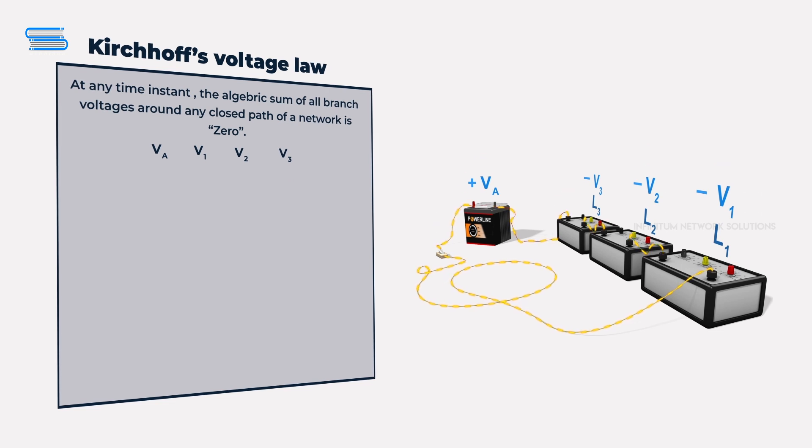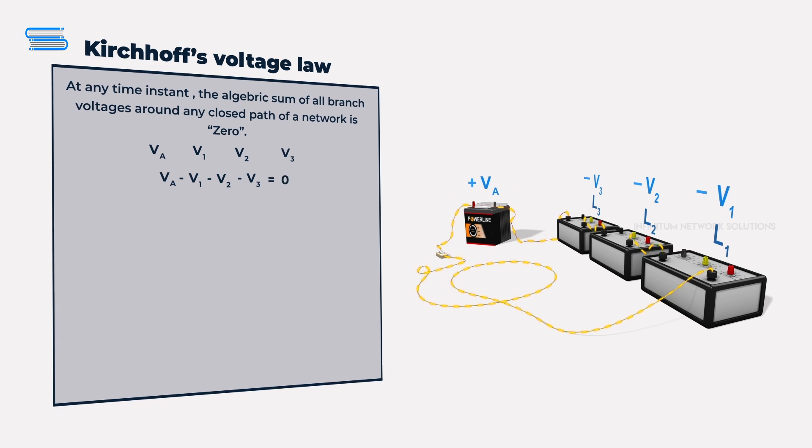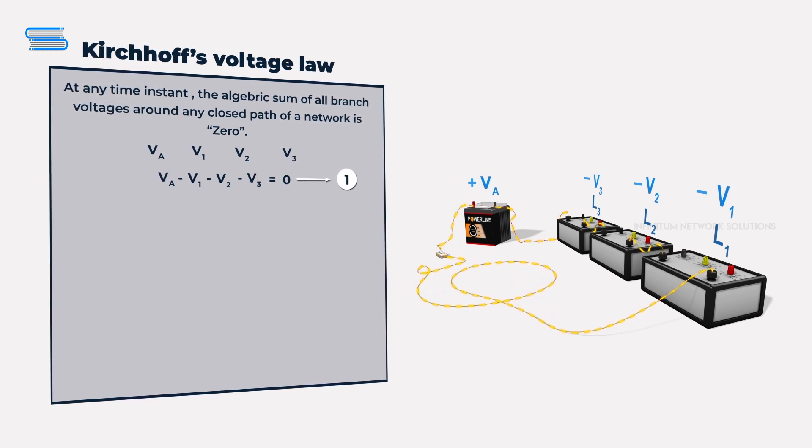This means that VA minus V1 minus V2 minus V3 is equal to zero. Let's take this as equation one.